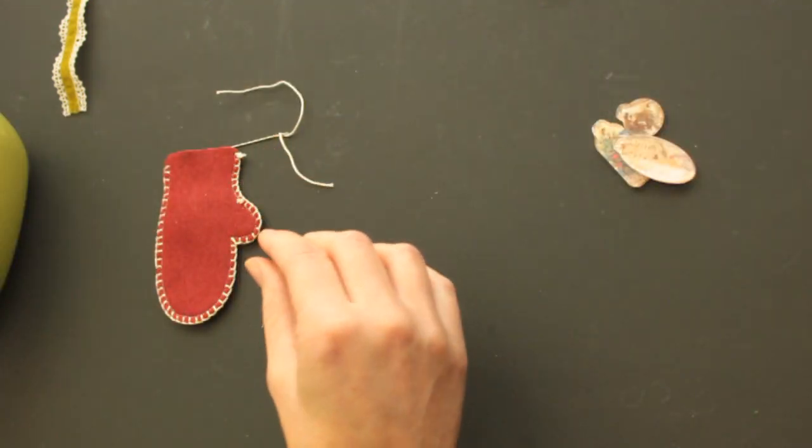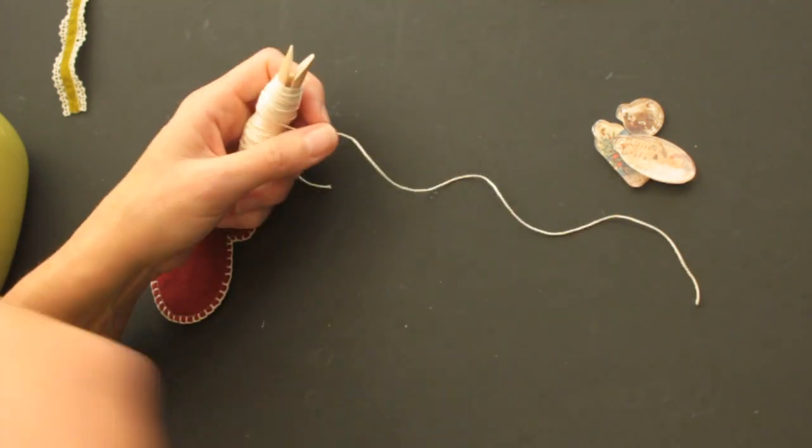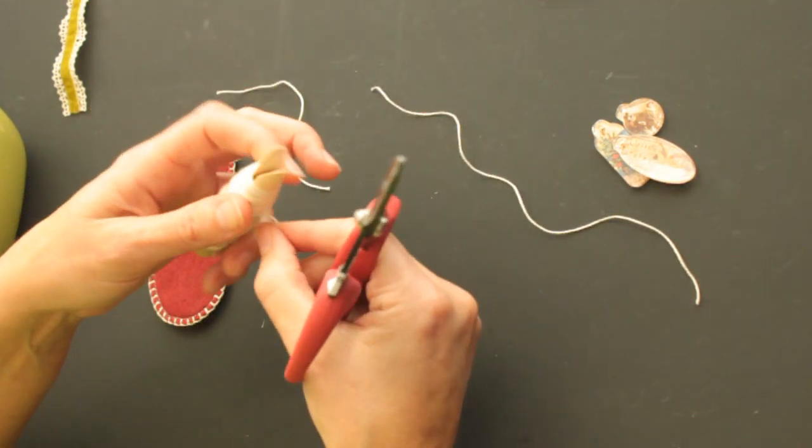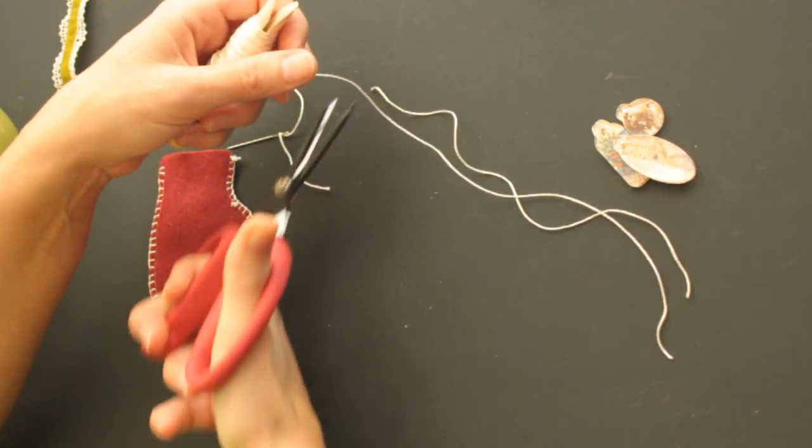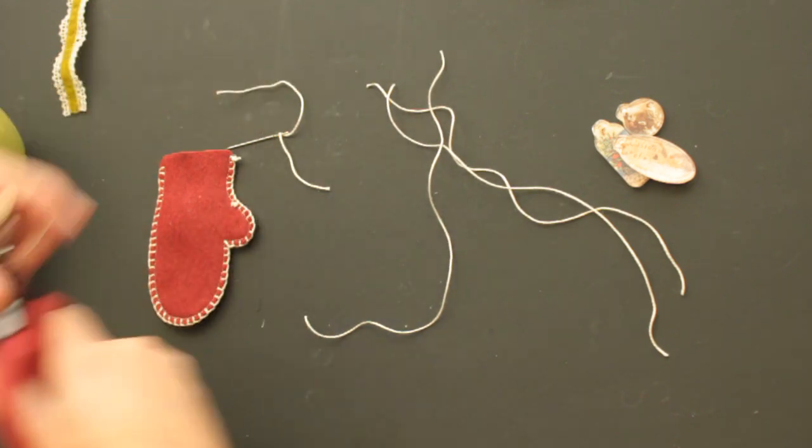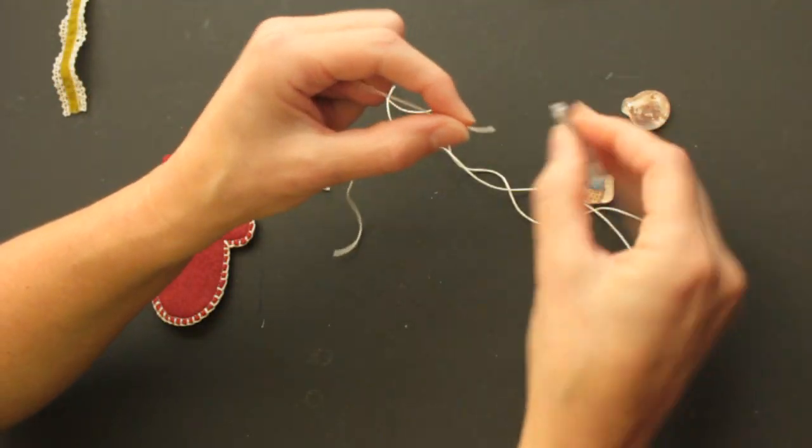Then cut some embroidery floss, the same one you used for stitching your mitten, to hang your ornaments on. Thread them through.